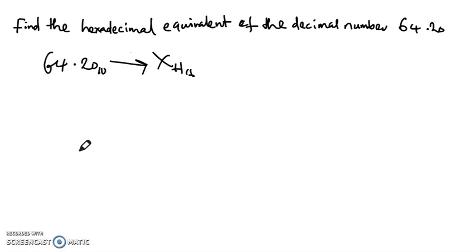So let's take 64. This is hexadecimal so it is going to be divided by 16. 16 into 64 will give us 4 remainder 0, 4 remainder 0.